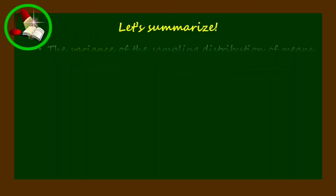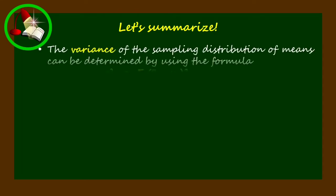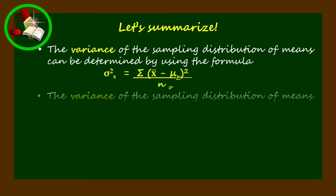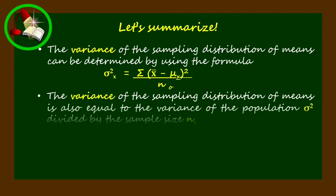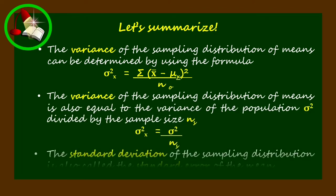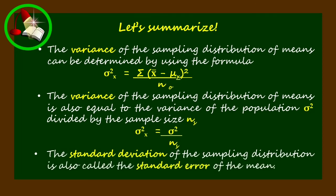The variance of the sampling distribution of means can be determined using the formula: sigma squared sub x equals the sum of the squared difference between the sample mean and mu sub x, divided by the number of observations. The variance of the sampling distribution of means is also equal to the variance of the population divided by the sample size. The standard deviation of the sampling distribution is also called the standard error of the mean.